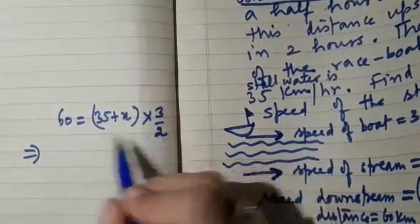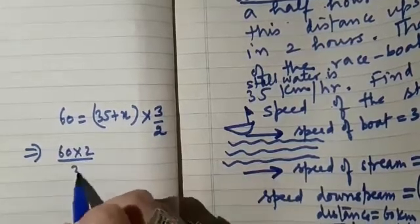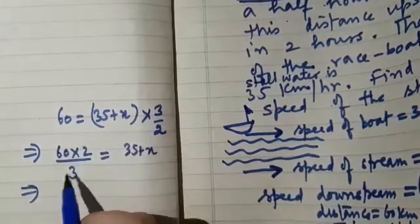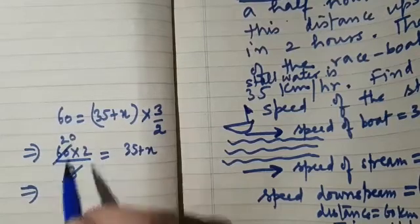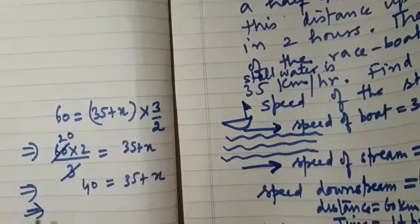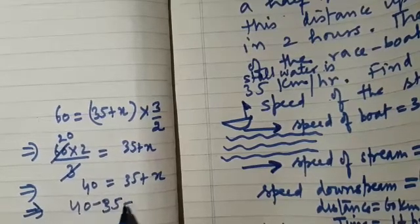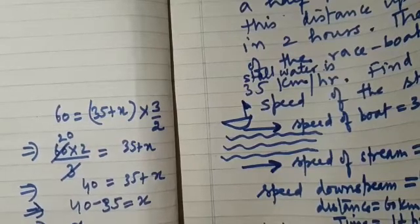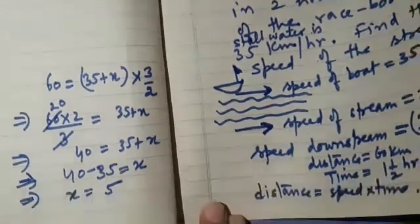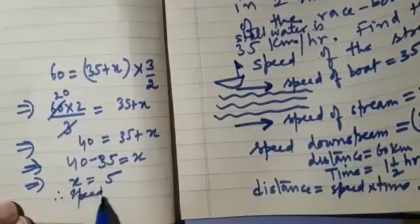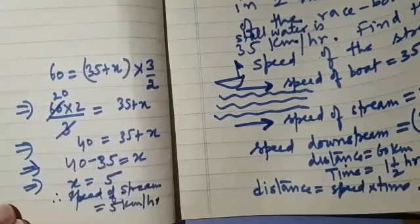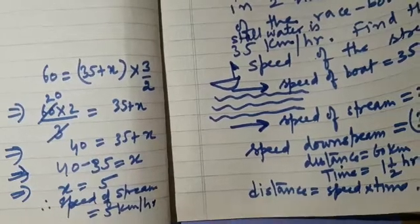We can write this as 60 into 2 by 3 is equal to 35 plus X. Simplifying, 40 is equal to 35 plus X, which implies 40 minus 35 is equal to X. So X is 5, and this will be the speed of the stream. Therefore, speed of stream is equal to 5 kilometers per hour.